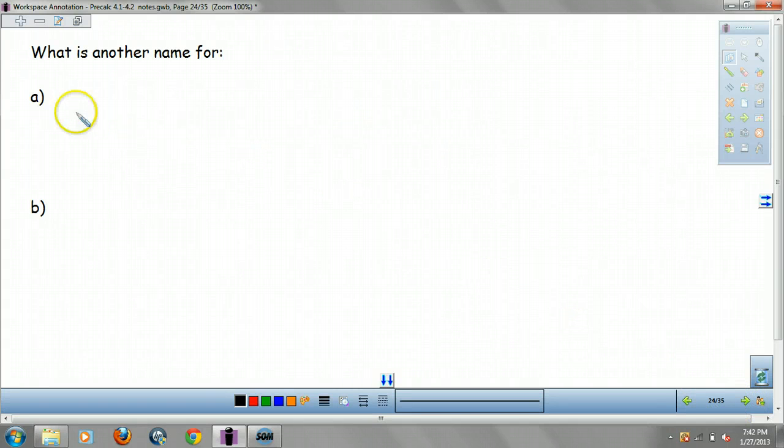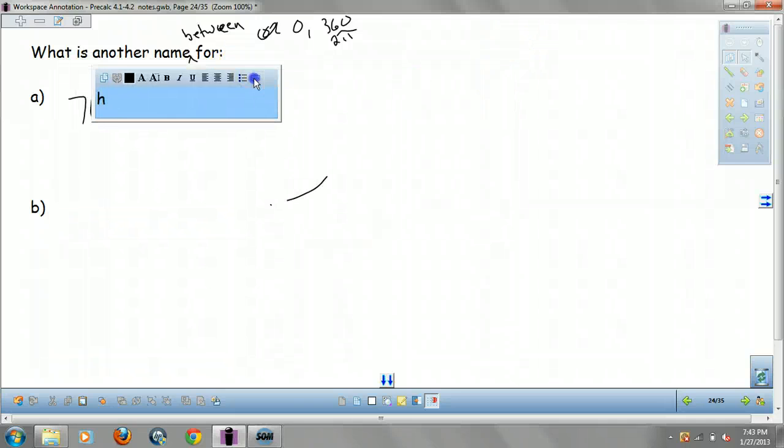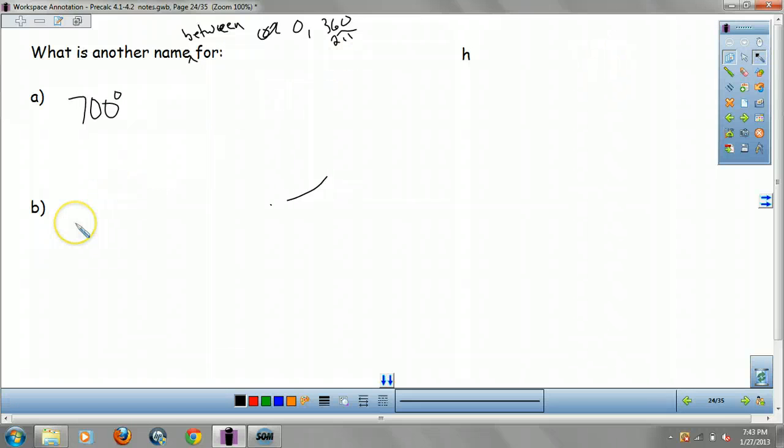What is another name for, let's make it 700 degrees and another name between 0 and 360 or 0 and 2 pi. So we're trying to get back to the original. So we have 700 degrees and then we'll make up another one. We'll make another one, go like 7 pi.